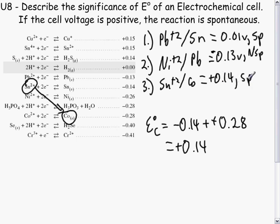And that is the review for PLO U8, describing the significance of the E-naught of an electrochemical cell.